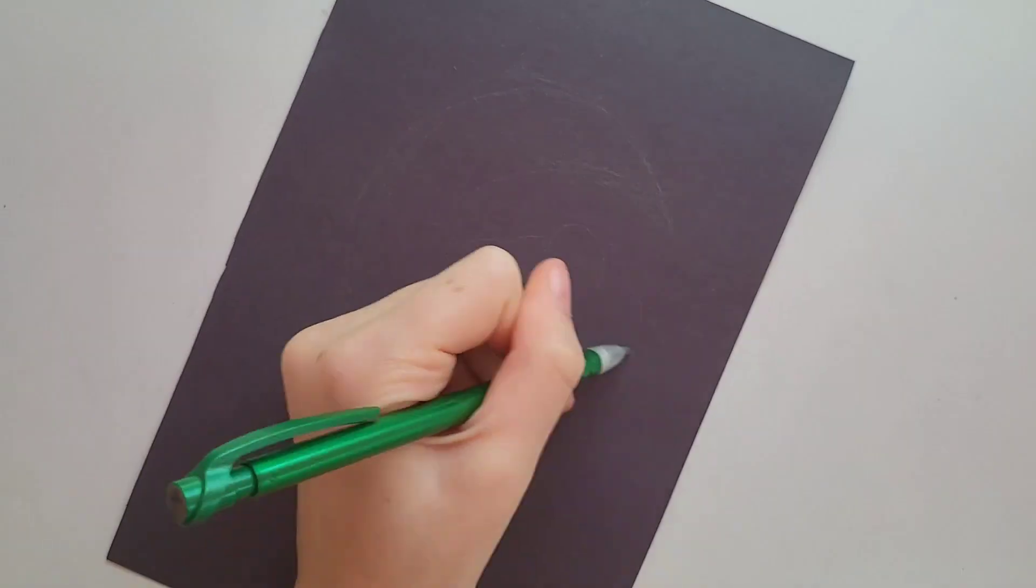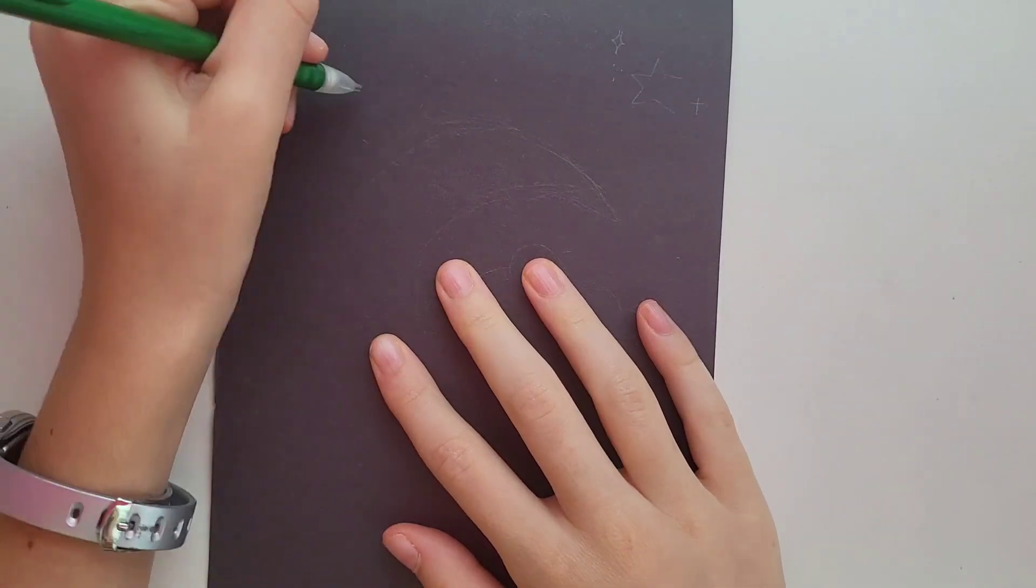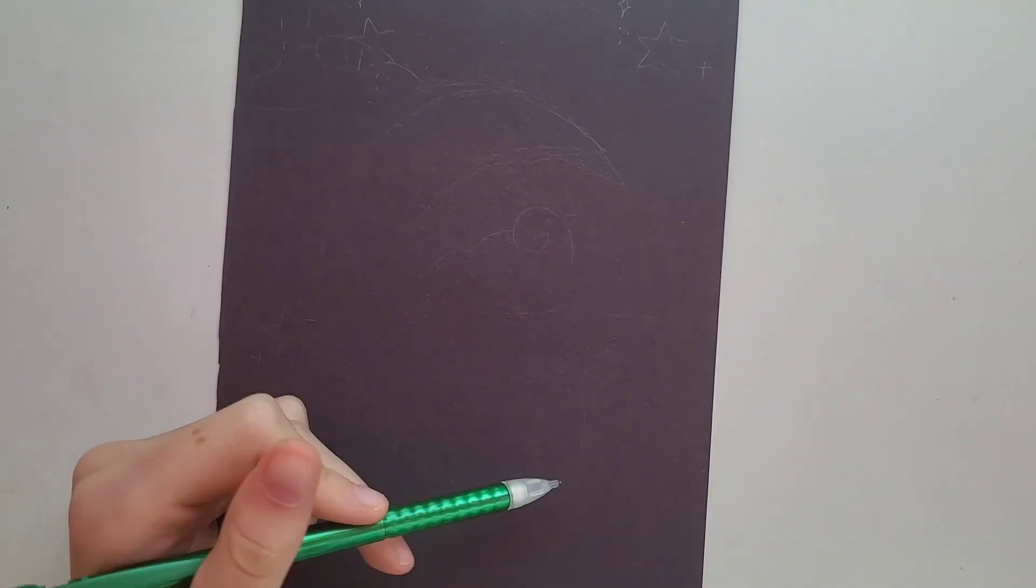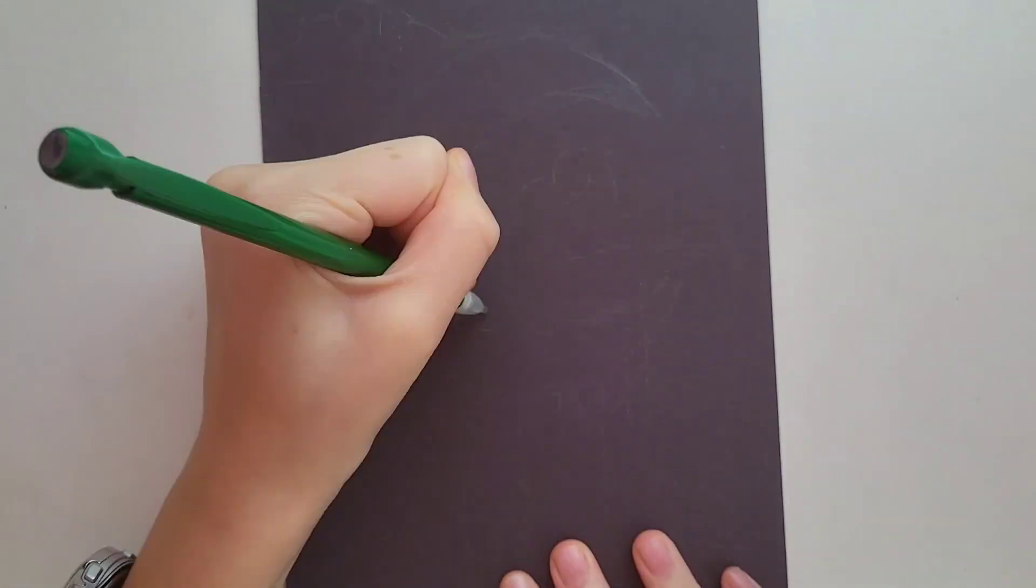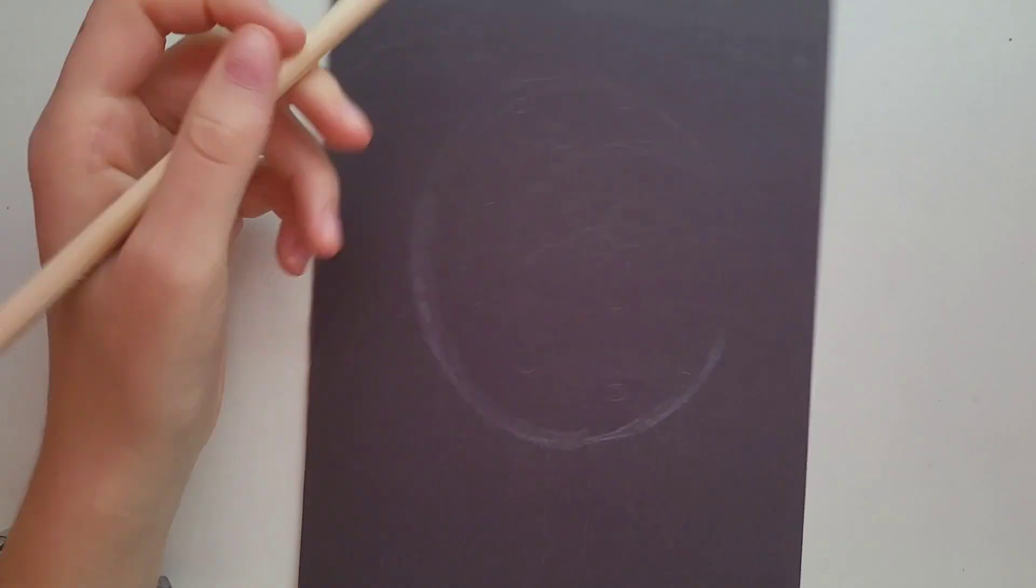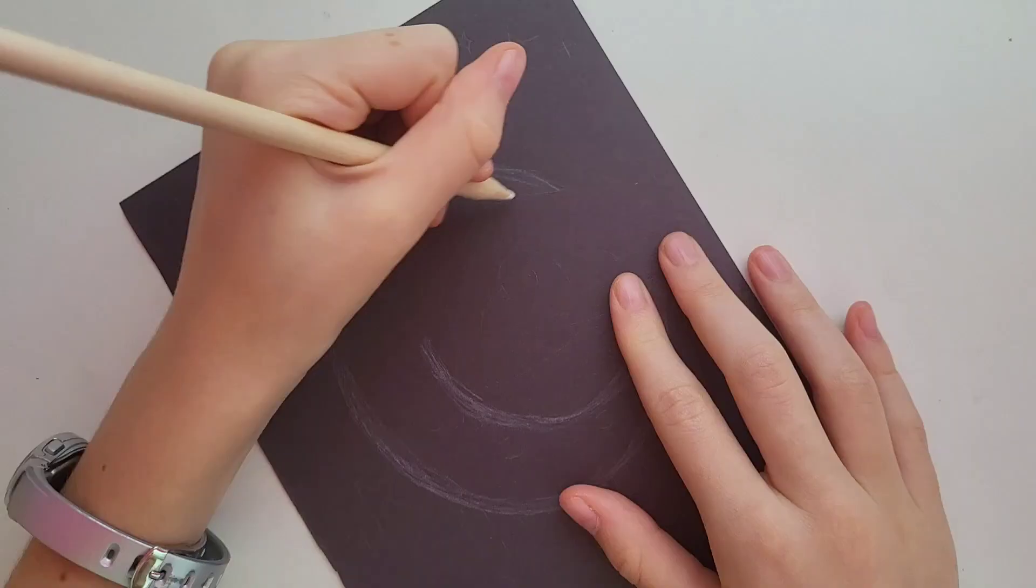I just started off with the sketch. I know I said I was only going to be using the white colored pencil, but I allowed myself a regular pencil just so that I could sketch without it being too apparent if I made a mistake. I know you can't see it that well, but I went for a big moon in the center and then some clouds and stars surrounding it, just making it look very magical and whimsical.